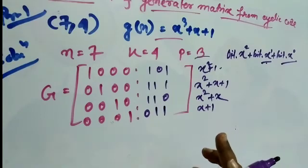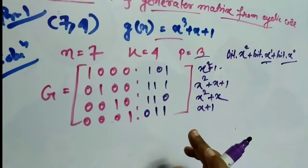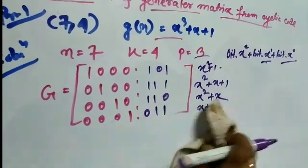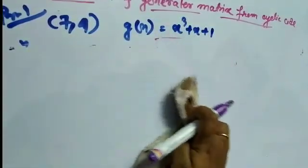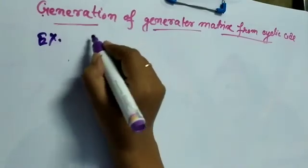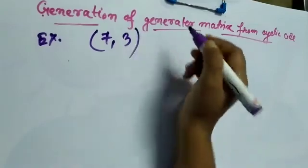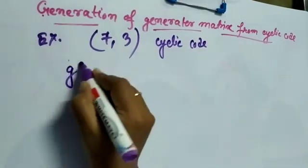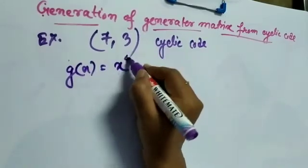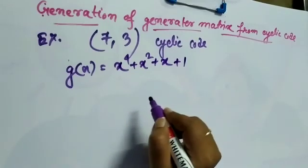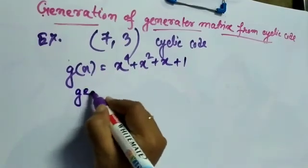I hope all of you understand the topic. Here is an exercise for you: consider a (7,3) cyclic code with generator polynomial g(x) = x^4 + x² + x + 1. Your task is to find the generator matrix for that code. Do it yourself and send me the answer.